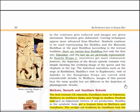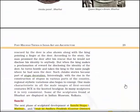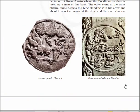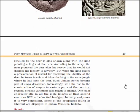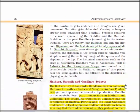At Sanchi Stupa 1, narratives get more elaborated. However, the depiction of the dream episode remains very simple, showing the reclining image of the Queen and the elephant at the top. Historical narratives such as the siege of Kushinara, Buddha's visit to Kapilvastu, and the visit of Ashoka to Ramangarama Stupa are carved with considerable detail. Here you will see the stone carving of the Stupa at Sanchi. Here is Queen Maya's dream at Bharud — a queen lying with an elephant appearing in her dream.